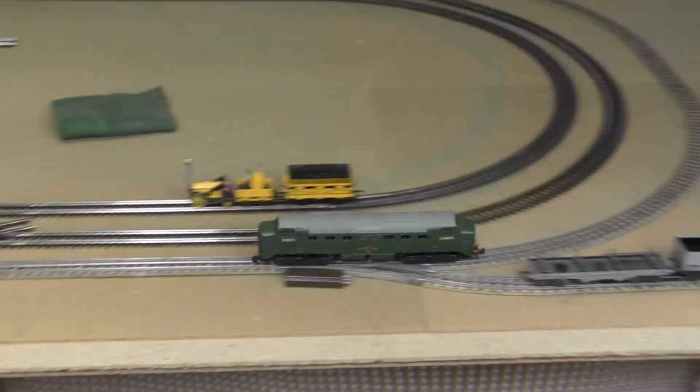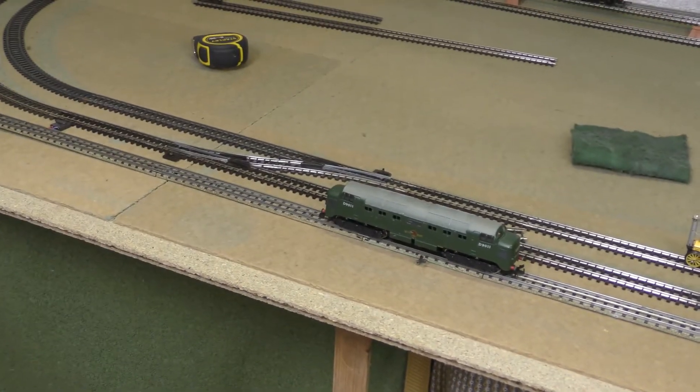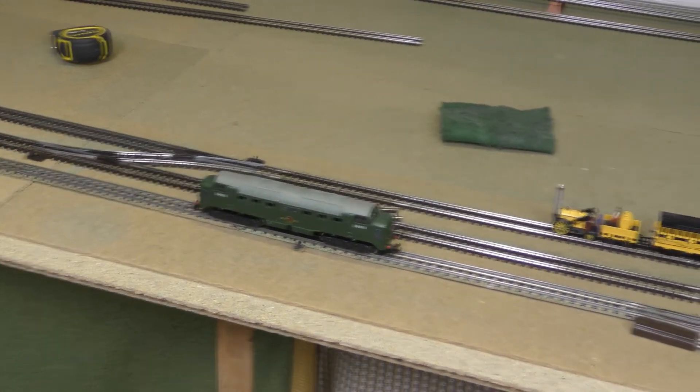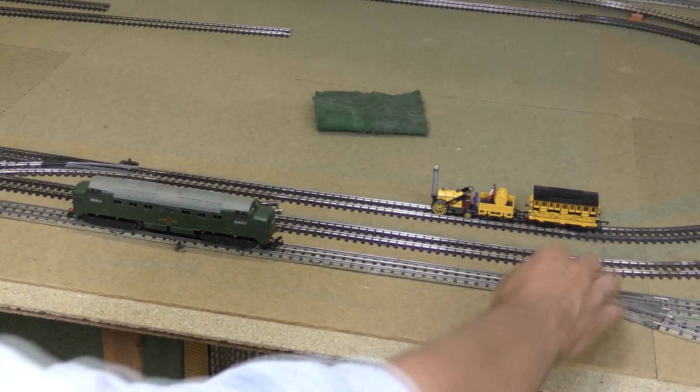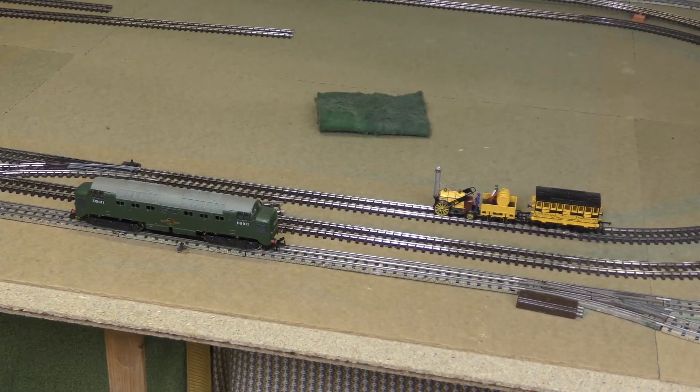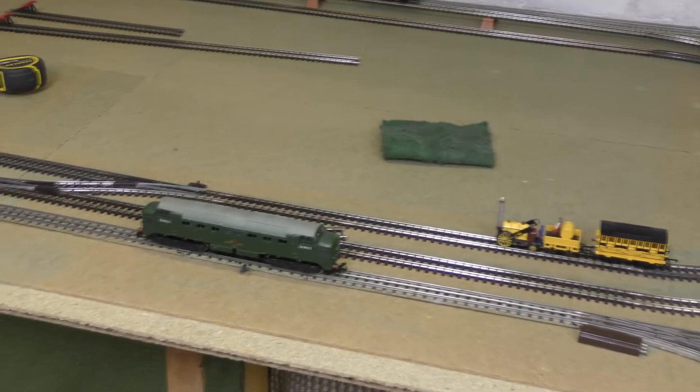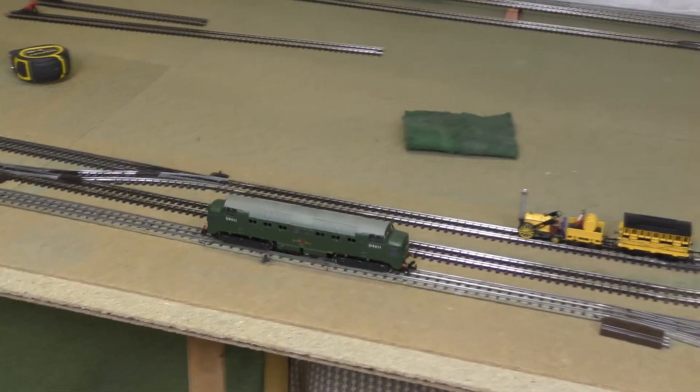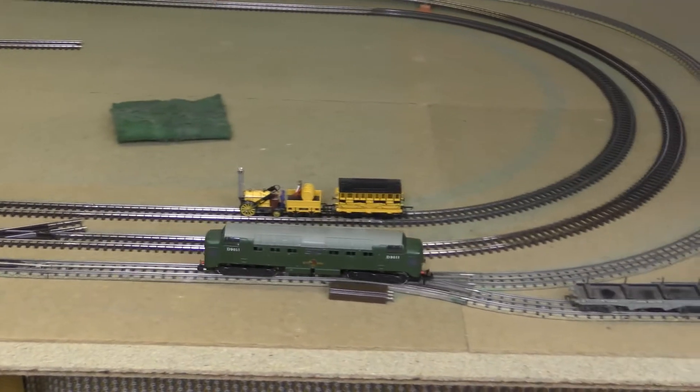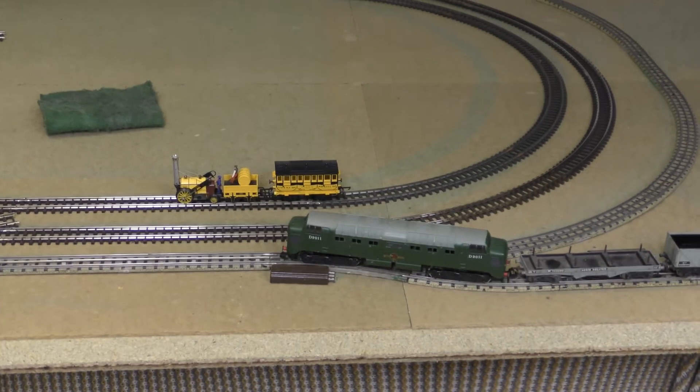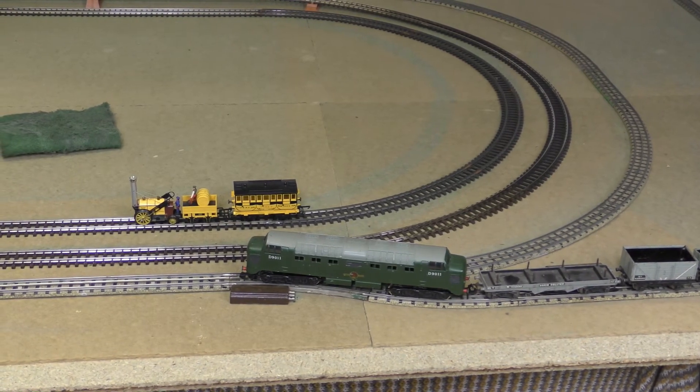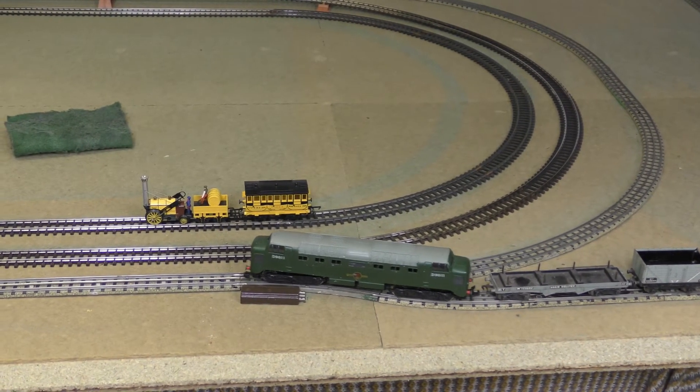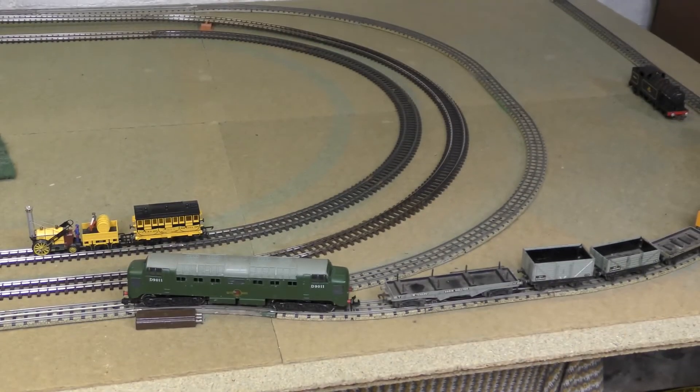I think once it's running in a bit it's going to be quite good. Okay, I'll just alter these points by hand, and then we'll reverse in and get this little rake of wagons. Carefully over the points. Now I don't know whether that's going to have coupled by itself - I haven't checked the couplings. Let's see, let's move forward. No, I'm going to have to couple this by hand, so just bear with me a fraction.